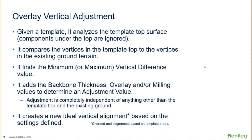Then what does it do? It compares the vertices and the top template points to the vertices in the existing ground terrain, and it finds the minimum or the maximum vertical difference value. It'll then add the backbone thickness if you specified one. It'll add in overlay and milling values to determine an adjustment value.